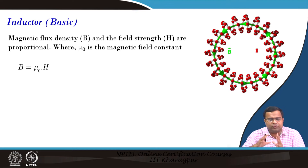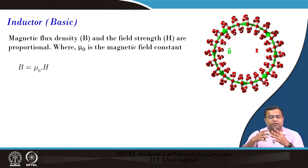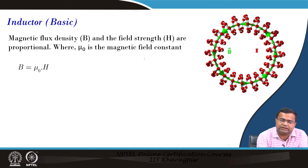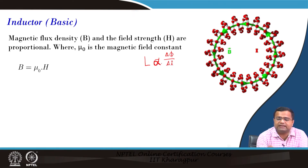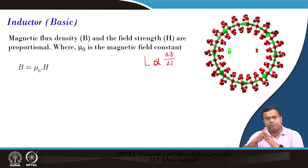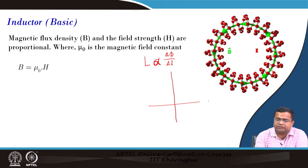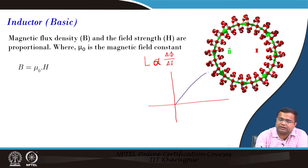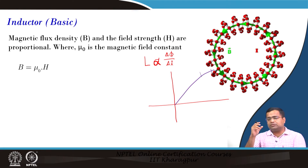If you talk about the inductor, we know about the inductor's BH characteristics. We can define the inductance — what is the value definition of inductance? It is nothing but the flux change divided by the current change. That is the proportionality factor. So inductance is proportional to the flux change by current change. As long as we are in the linear region of the BH curve, the inductance will be constant. But if you enter into the non-linear region and go into this part of the BH curve, the flux change will be less but current change will be more, so the inductance value will reduce.